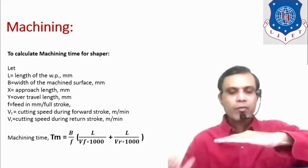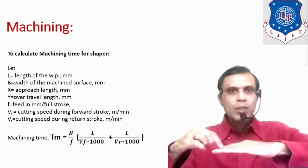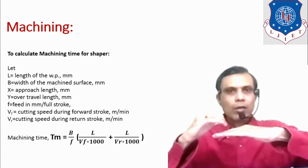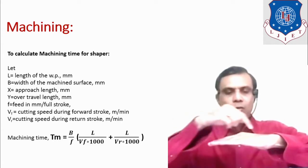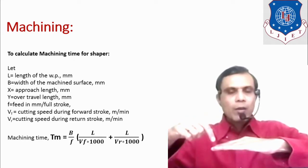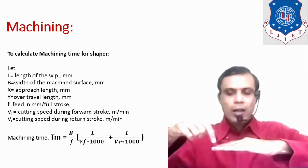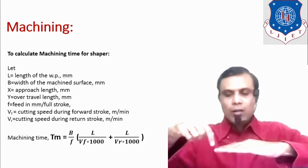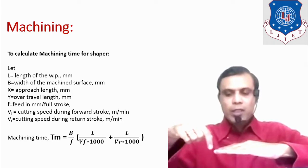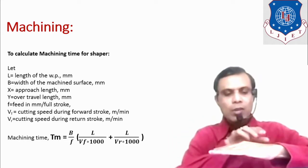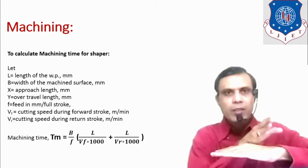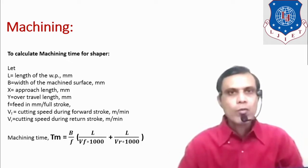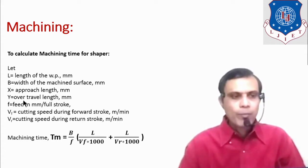Suppose this is a workpiece surface we want to machine. The cutting tool has to move along the full length. However, the cutting tool does not start cutting from the very edge — it must approach from some distance before, which is the approach length X. Similarly, after the cut finishes, the tool travels a further distance beyond the workpiece edge, known as the over travel length Y.